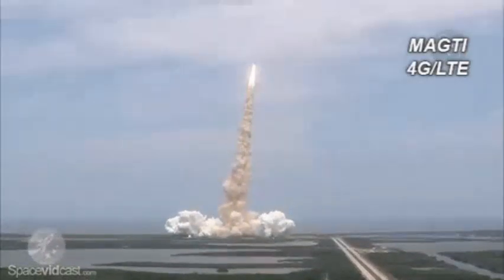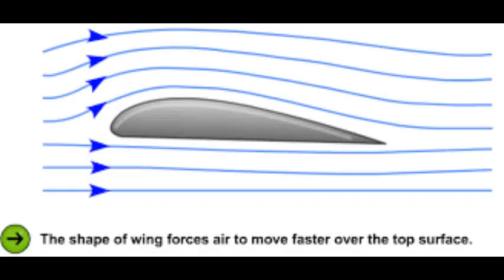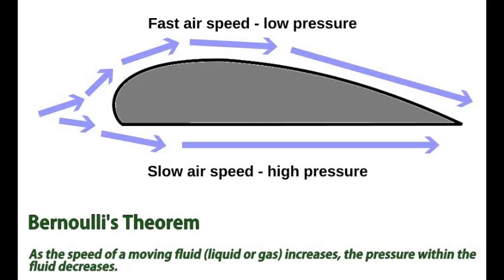Aeroplanes are able to fly because of lift by air. The wings are responsible for an aeroplane's lift, and aeroplane wings are designed to be round on the top and flat on the bottom, so that air moves faster over the top of the wings and slower under the bottom of the wings.